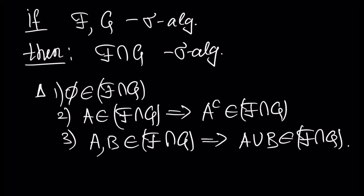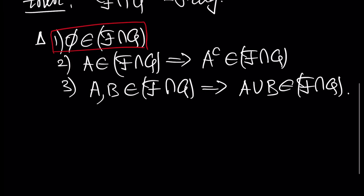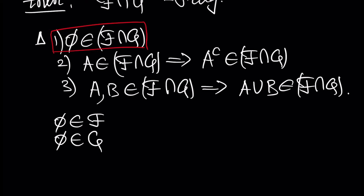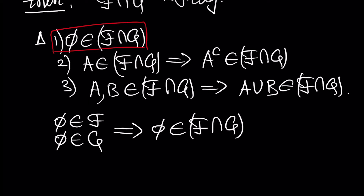So let's show the first part of the definition. Obviously, since the empty set is inside F — because F is a sigma algebra — and the empty set is inside G — because G is a sigma algebra — it means that the empty set is also inside the intersection of F and G. So this is the first part of the definition.